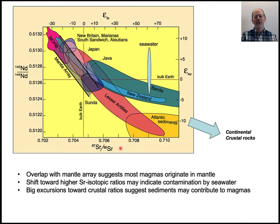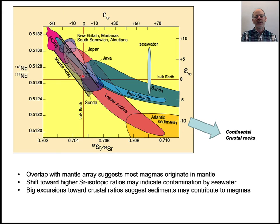This is neodymium isotopes versus strontium isotopes — a really common plot for looking at the geochemistry of different materials, and what it's supposed to get at is what is being mixed to create magmas. Mid-ocean ridge basalts live up here, bulk Earth is right there at the zeros, and these are the arrays of different arc compositions. If you start out with something from the mantle and mix it with seawater, it comes off in this direction.